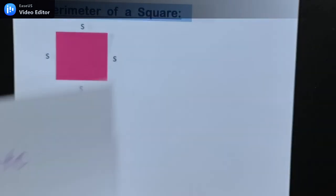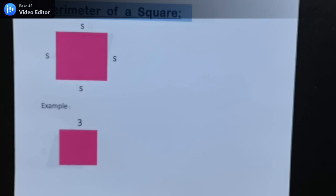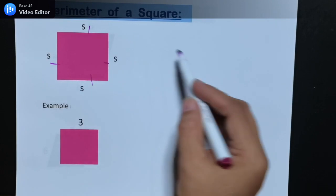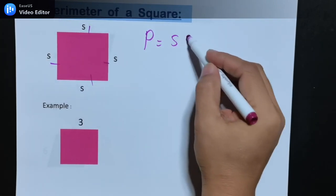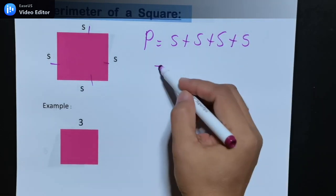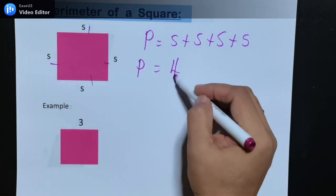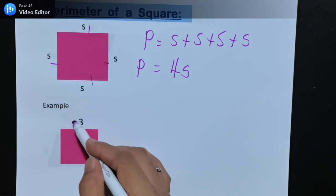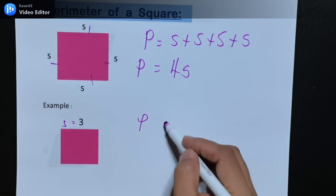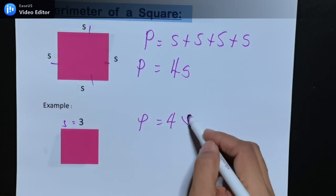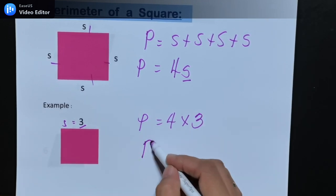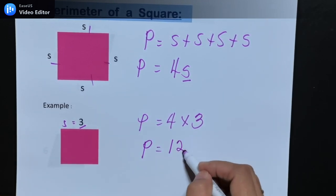Next, perimeter of a square. A square has 4 equal sides, so the perimeter is S plus S plus S plus S, or simply 4S. From this example, S is equal to 3. So the perimeter is 4 times 3, which gives us 12.